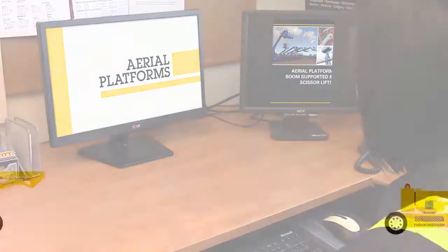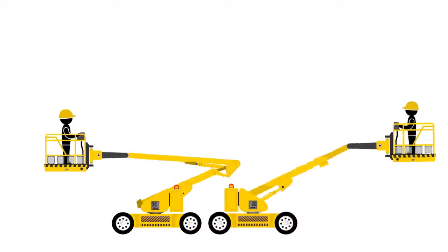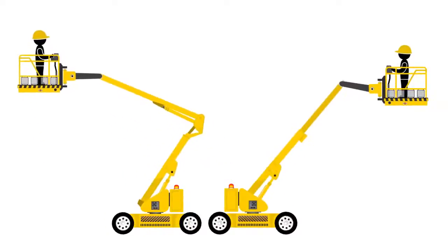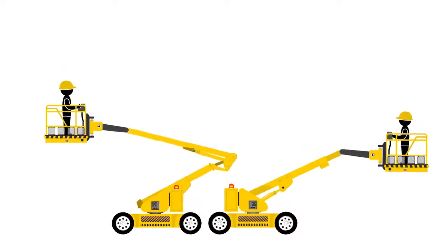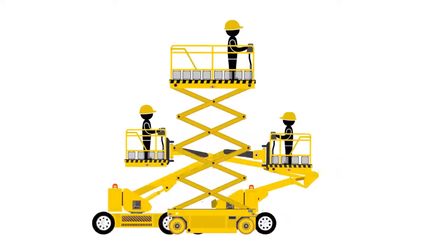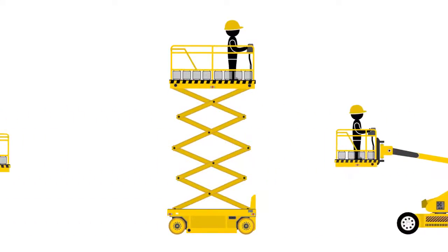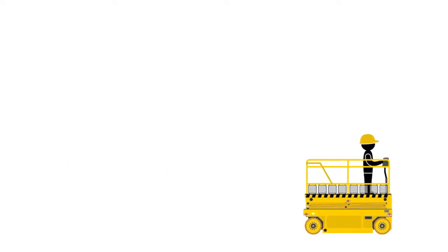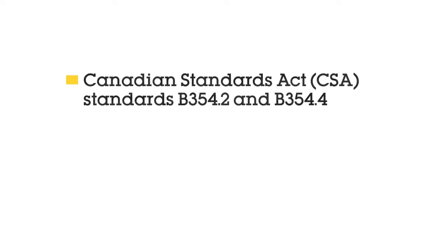This aerial platform online course will focus primarily on boom-supported aerial platforms, then finish with a chapter on scissor lifts. This course will help you meet the following government-regulated training requirements: Canadian Standards Act, or CSA, Standards B354.2 and B354.4.